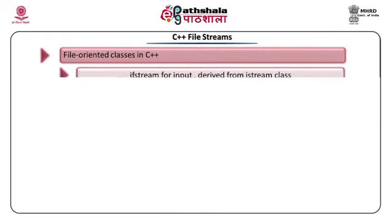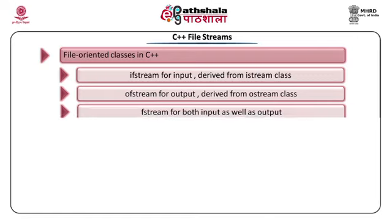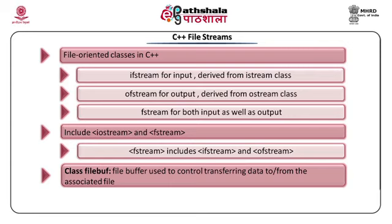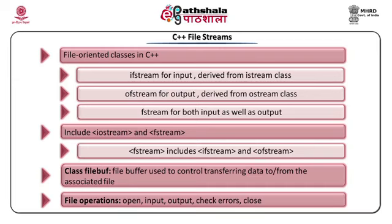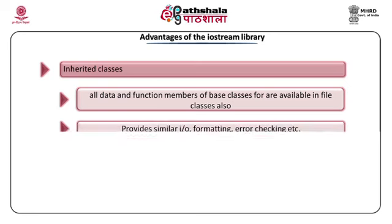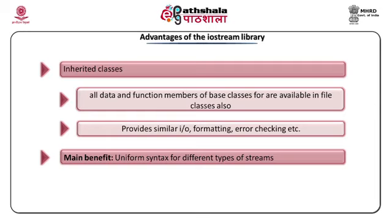To use files, we require file classes and the library to be included. We need to include the iostream and fstream libraries. The classes are: ifstream, which is derived from istream; ofstream, which is derived from ostream; and fstream, which is multiple-inherited from both ifstream and ofstream. These classes additionally use one more class called filebuf — just like streambuf for standard IO — where a buffer is allocated to control the transfer of data between the associated files and memory. It is very easy to work with files because the file classes are inherited from iostream classes, and the syntax for all functions, including error checking, remains the same.